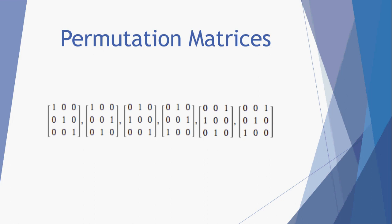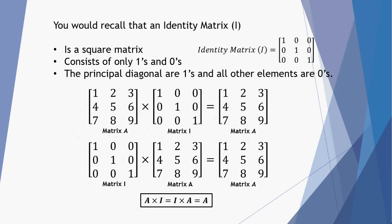Welcome to this tutorial video on permutation matrices. Let's start with an identity matrix. Most people will be aware that an identity matrix is a square matrix. It contains 1s and 0s, and all the 1s are located across the principal diagonal. Now when you multiply a matrix, such as matrix A, by the identity, it returns you matrix A.